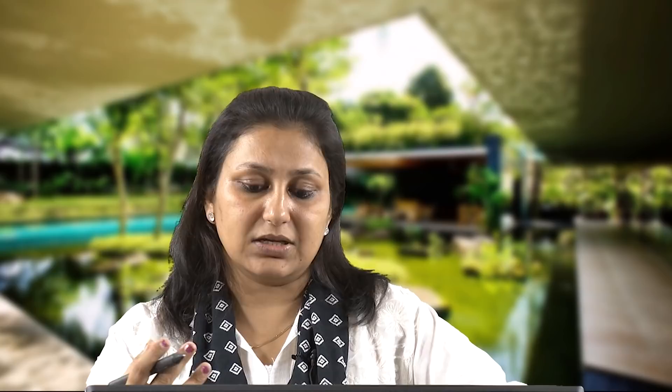So there were discussions and talks; we were still doing a lot of work on climate responsive buildings. There were architects and stalwarts making climate responsive, passively designed, ecological buildings. But formally the Indian Green Building Council was launched in 2001, which is an important year for us in India. In 2002 the first GreenBuild conference was organized, and Canada GBC and World GBC were also formed.